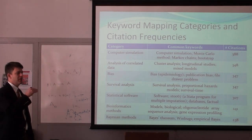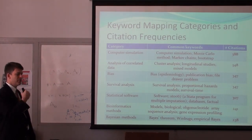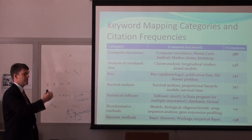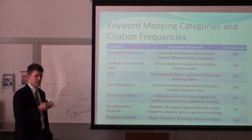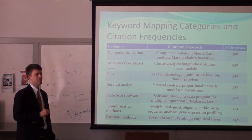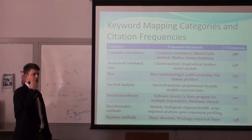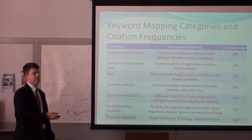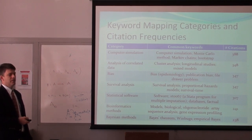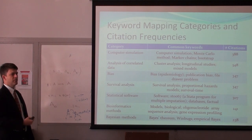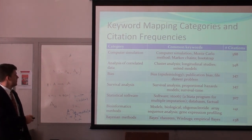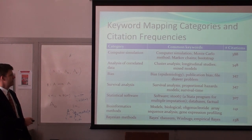Whenever you do a survival study, eventually you have to stop the study and you don't know the actual survival time — that's called censored data. You know that a patient lived at least this long. If you're doing a cancer study to see if one drug extends survival, you often can't study the patients long enough to know everybody's survival time, so there are mathematical ways of handling that censoring process.